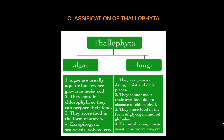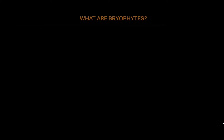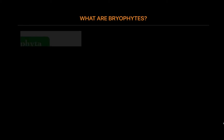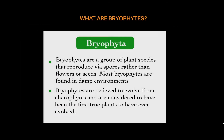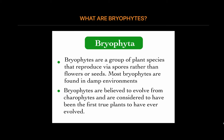This is about Thalophyta. Now let's study about the second subdivision of Kingdom Plantae, that is Bryophyta. Bryophytes are small, non-vascular land plants that require water for reproduction.